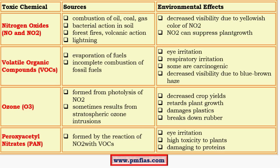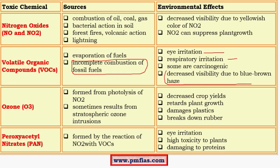Volatile organic compounds like petroleum products are volatile — they evaporate very quickly. They are formed due to evaporation of fuels and also incomplete combustion of fossil fuels. Incomplete combustion is dangerous because it creates volatile organic compounds. Their environmental effects include eye irritation, respiratory irritation, and some are carcinogenic. They are also associated with decreased visibility during blue-brown haze. So nitrogen oxides give a yellowish atmosphere whereas volatile organic compounds produce blue-brown haze.